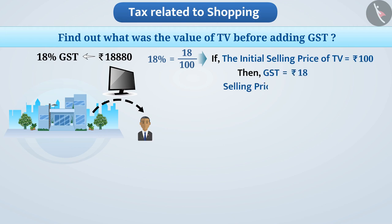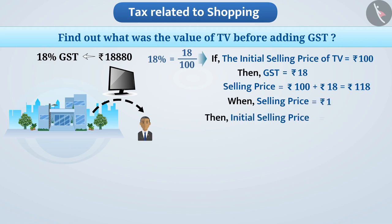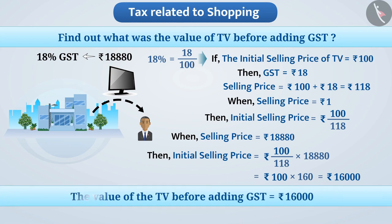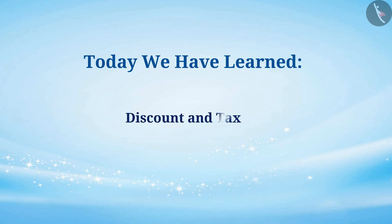So the selling price including GST = 100 + 18 = 118 rupees. When the selling price is 118 rupees, the initial price is 100 rupees. When the selling price is 1 rupee, the initial price is 100 ÷ 118. Therefore, when the selling price is 18,880 rupees, the initial price = (100 ÷ 118) × 18,880 = 16,000 rupees. That is the value of the TV before GST was 16,000 rupees.